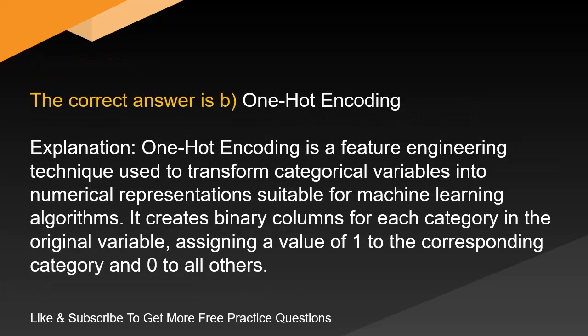The correct answer is B. One-hot encoding. Explanation: One-hot encoding is a feature engineering technique used to transform categorical variables into numerical representations suitable for machine learning algorithms. It creates binary columns for each category in the original variable, assigning a value of 1 to the corresponding category and 0 to all others.